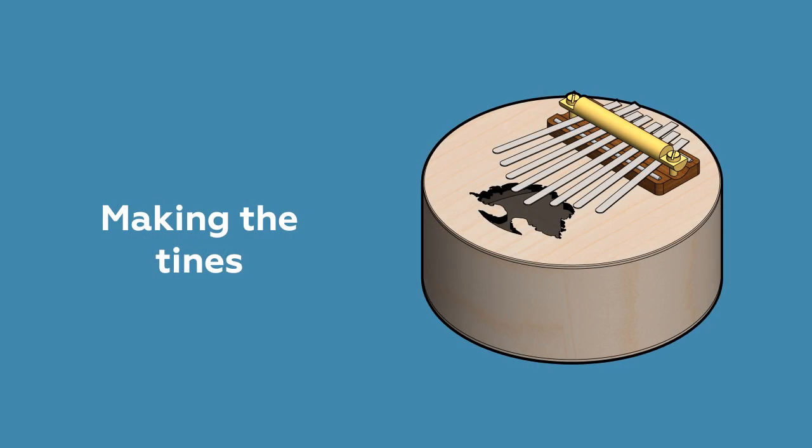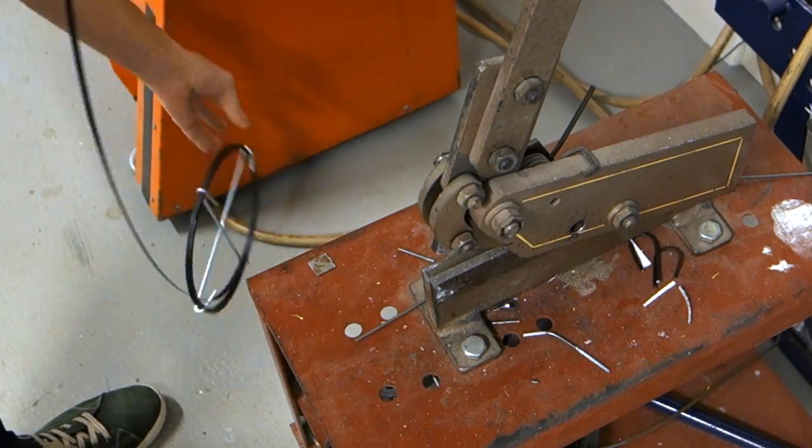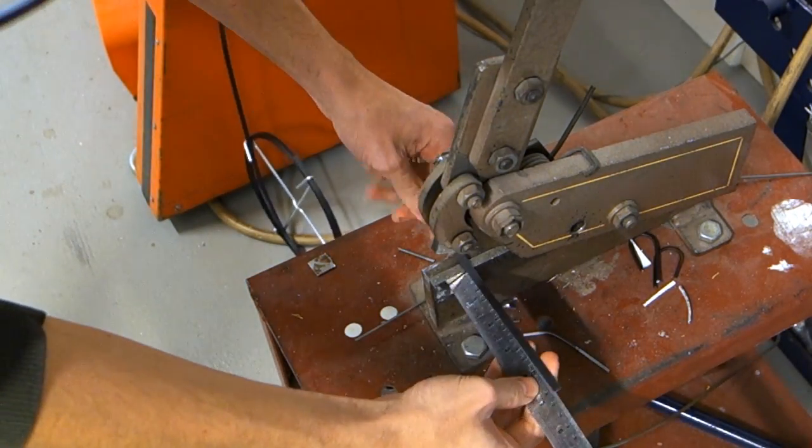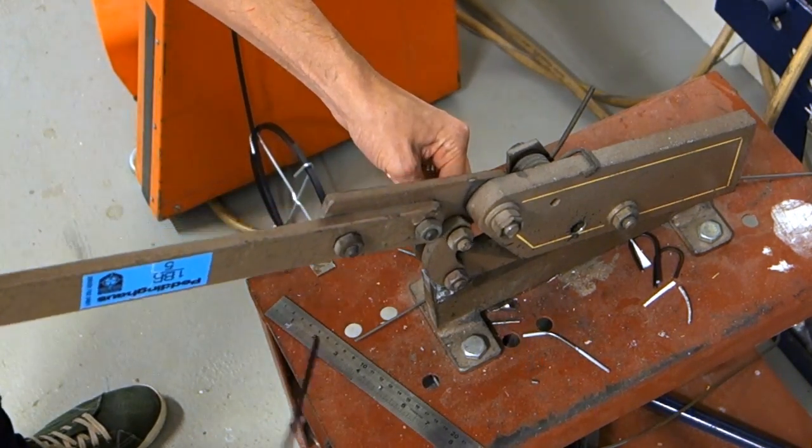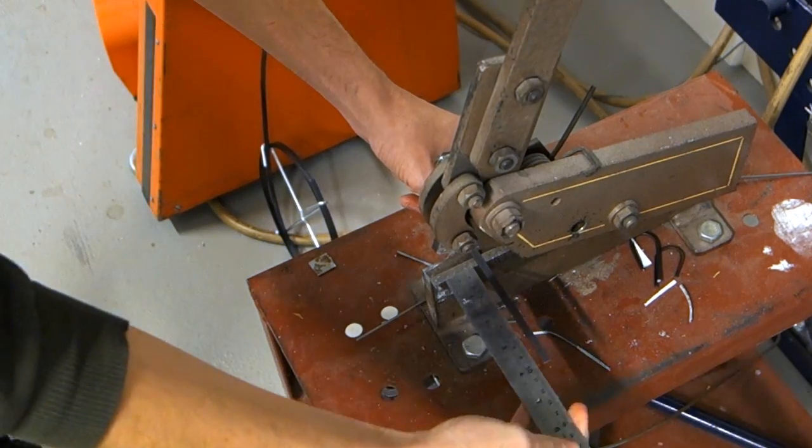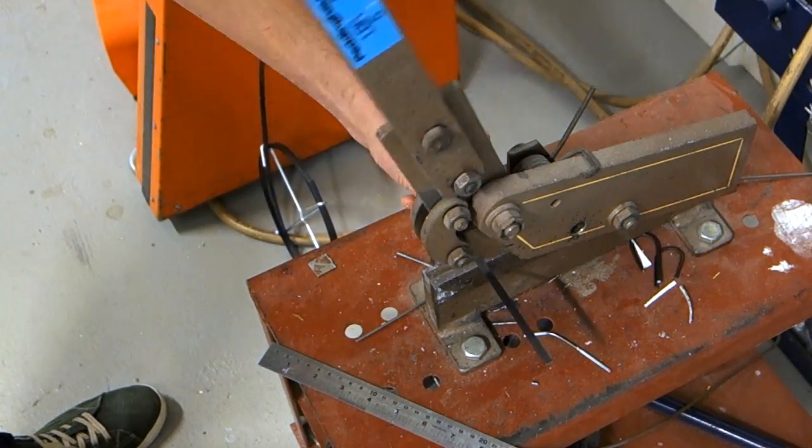The last items which need to be made are the actual tines. They need to be made from a springy material, obviously so they don't bend when you play them. Many people who make kalimbas use the teeth from metal rakes, and it does work great. In this case we used a steel drain cleaning strip, which also turned out well.